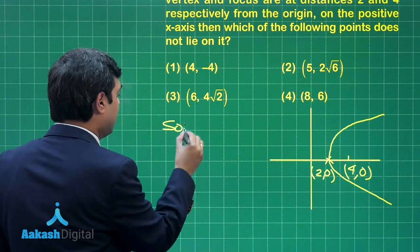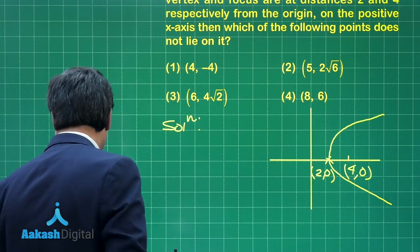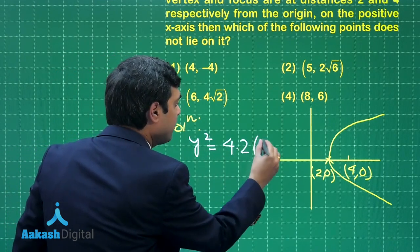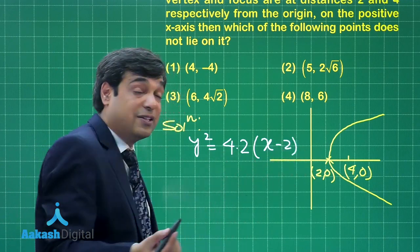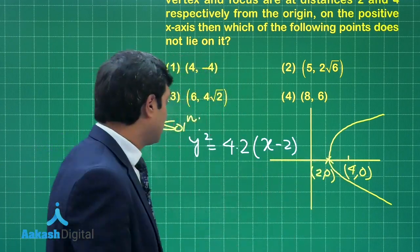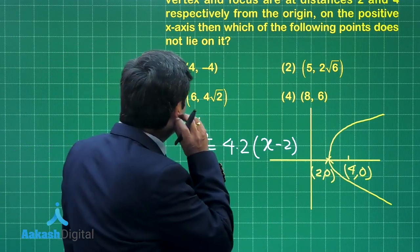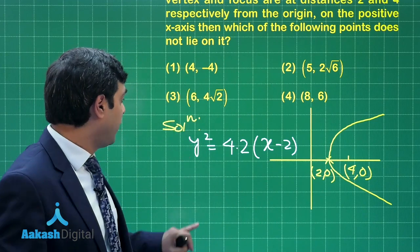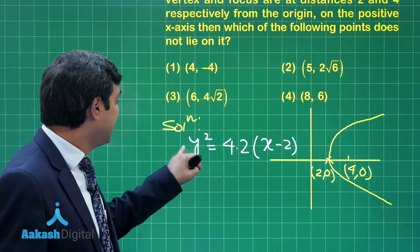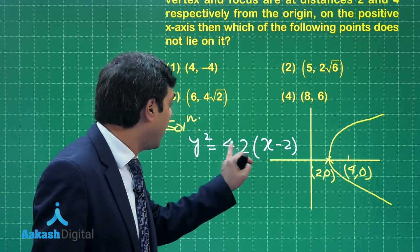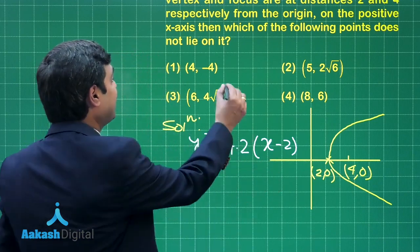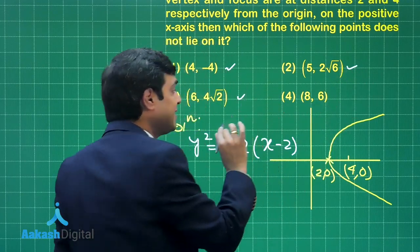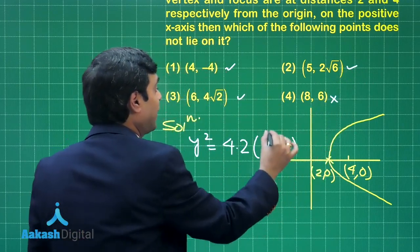Let us write down the equation of the parabola. We can say it is y² = 4×2(x-2) because a is 2. Now look at the options. Which of the following is not lying on it? (4,4) when you put here gives 16 on the left side and also 16. It is lying, so it is not the required one. Similarly, 2nd and 3rd are also lying, and only the 4th option is not lying.